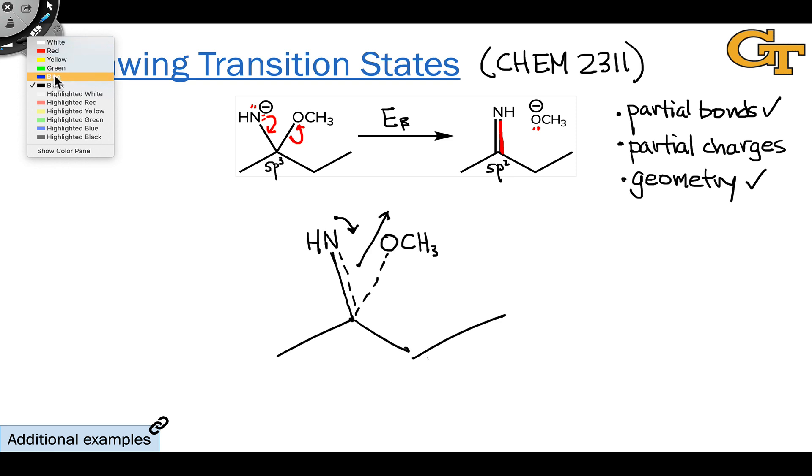What about partial charges? I encourage you to be very systematic in how you elaborate charges. The only atoms whose charges are changing in the course of this step are the nitrogen and the oxygen. We see the nitrogen going from negative one to zero, and the oxygen going from zero to negative one. This means that in the transition state, the nitrogen and oxygen are sharing negative charge. They both have charges that are less than one. This means that at the transition state, the nitrogen is partially negative and the oxygen is partially negative. And that's it. We've done it. This is a complete transition state for this beta elimination elementary step.